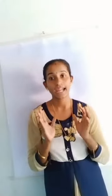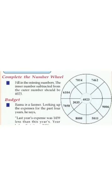First, we are discussing a real problem. Let's look at our question: Complete the number wheel. Fill in the missing numbers. The inner number subtracted from the outer number should be 4023. What are the numbers in that place?